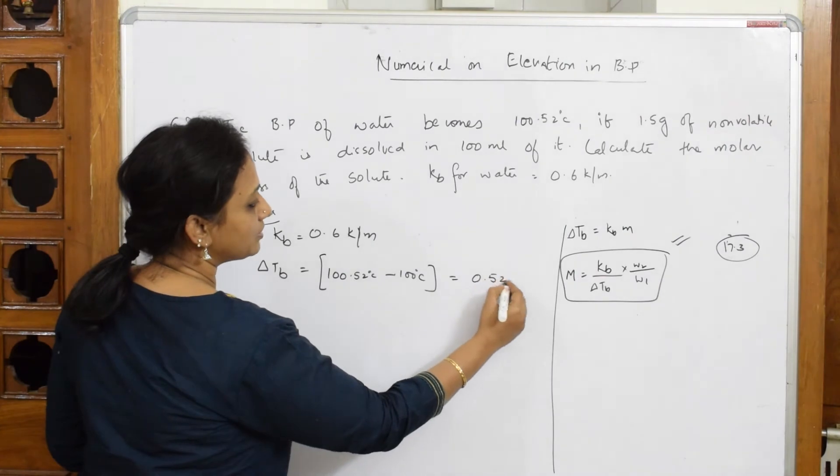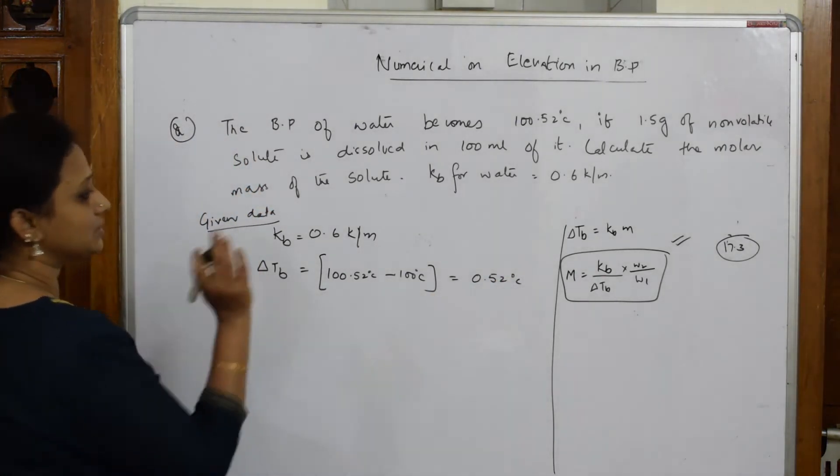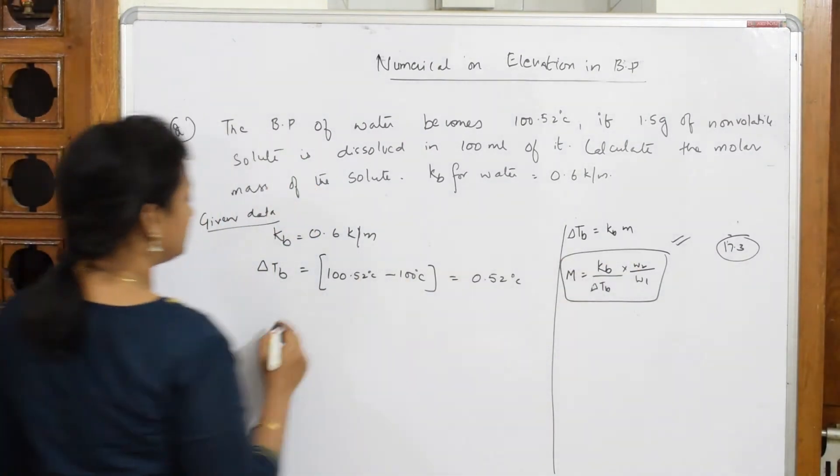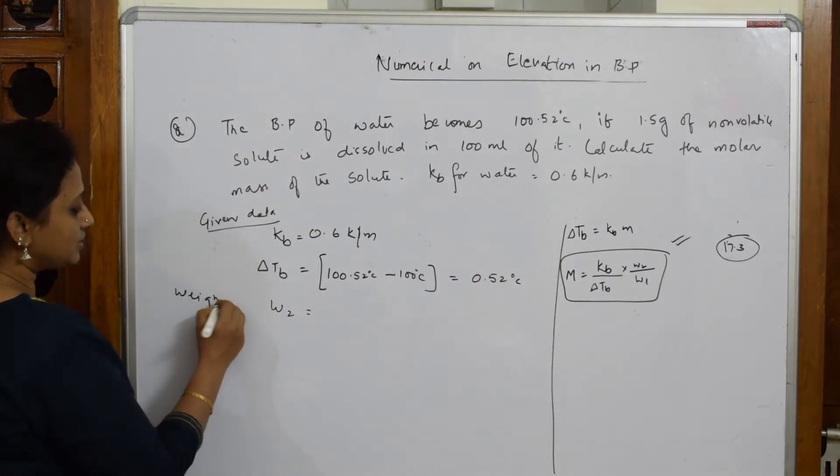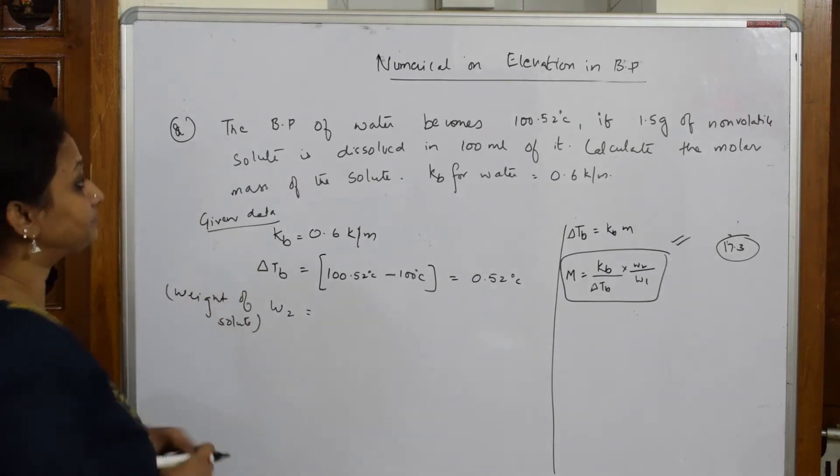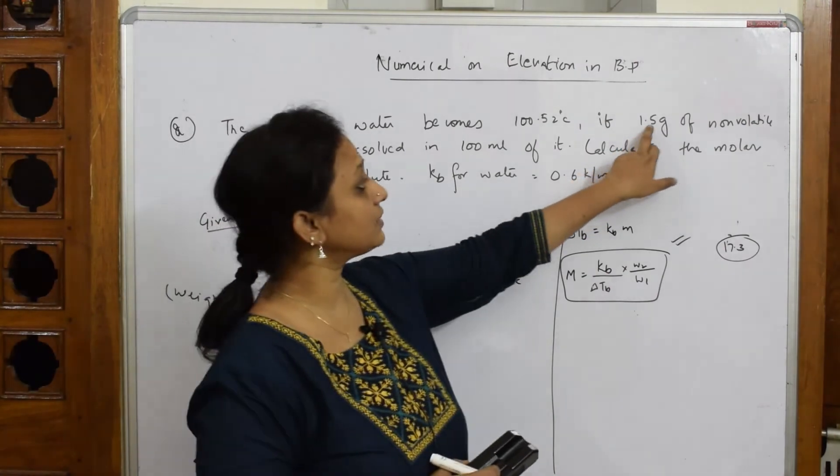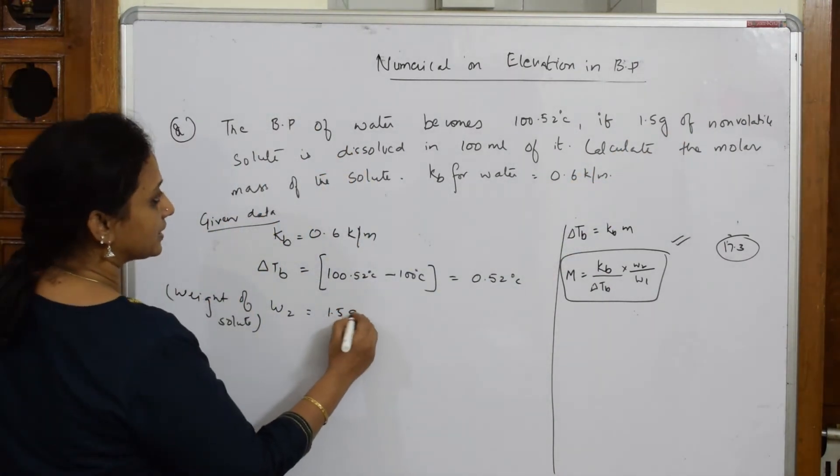Take this out and you get 0.52 degrees centigrade. This is your delta TB. Then delta TB is also over. Now let us find out W2. What did they give me? W2 is nothing but weight of solute always. Take the solute weight as W2. What did they give me? They have given me 1.5 grams of non-volatile solute. So W2 is 1.5 grams.